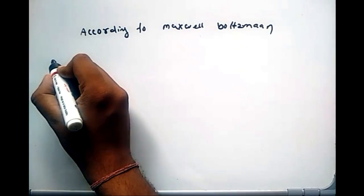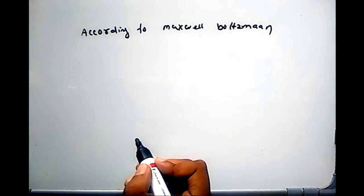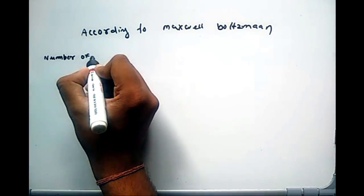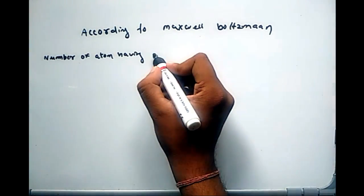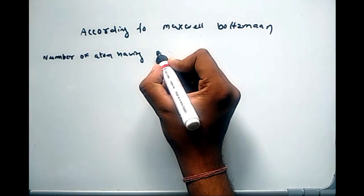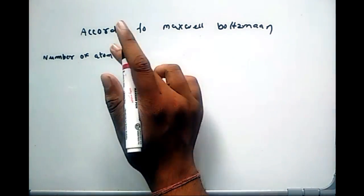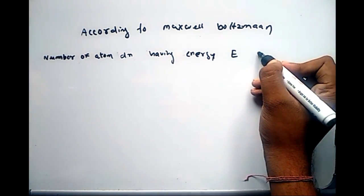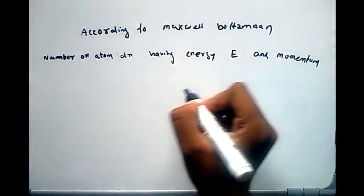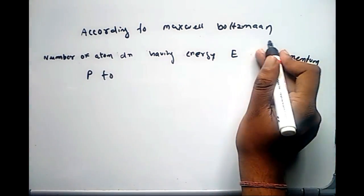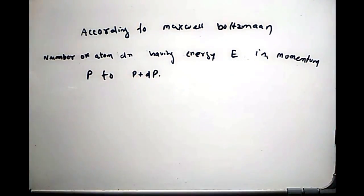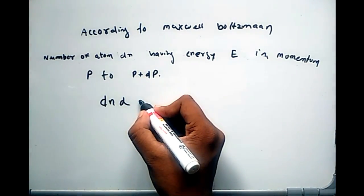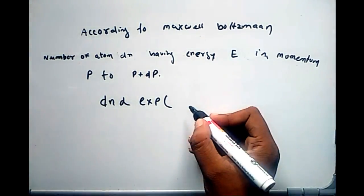...the number of atoms dN is proportional to e^(−E/kT) dp, or exponential of (−E/kT) dp. This is the Maxwell-Boltzmann distribution for energy.